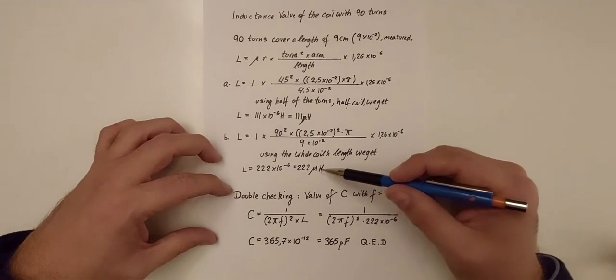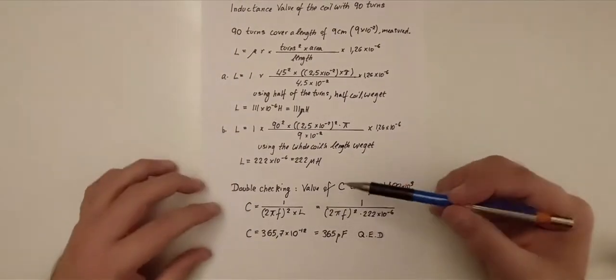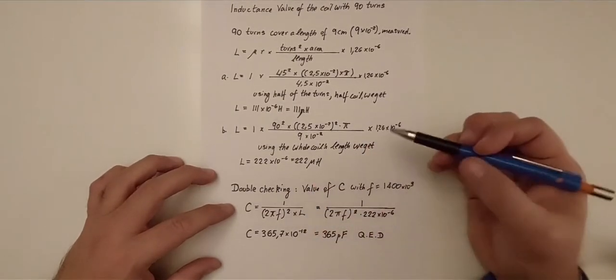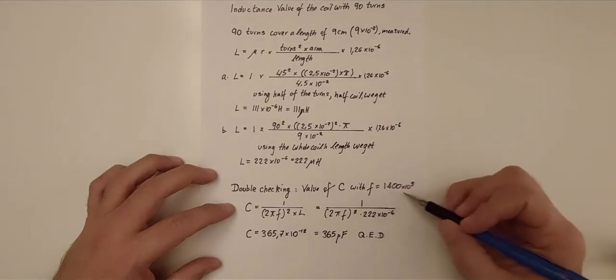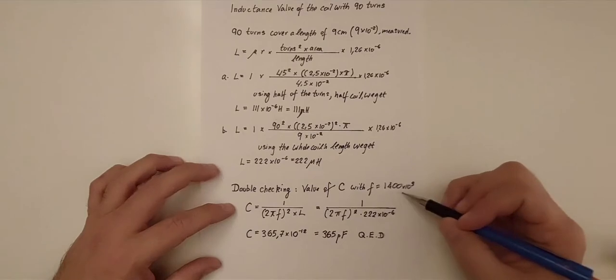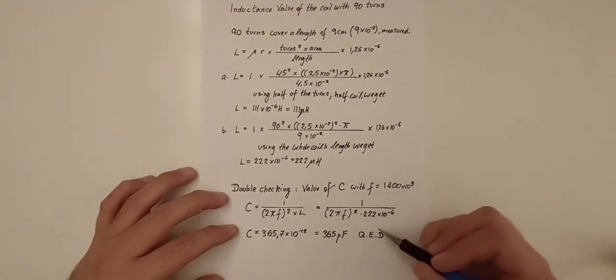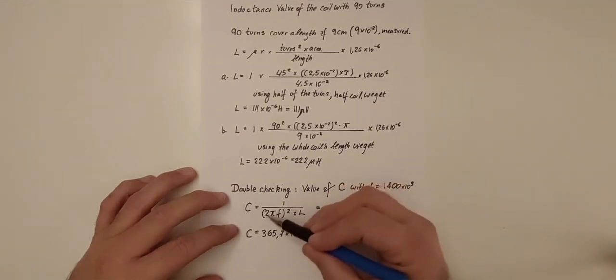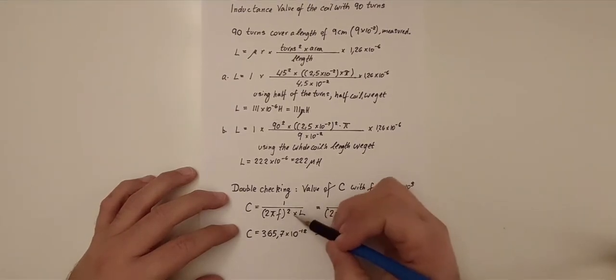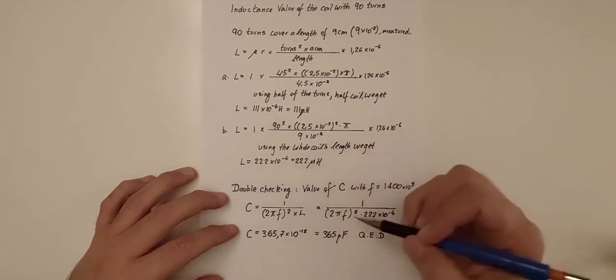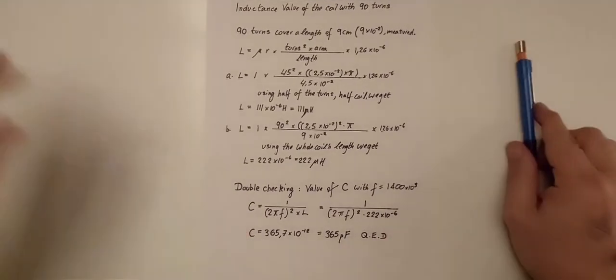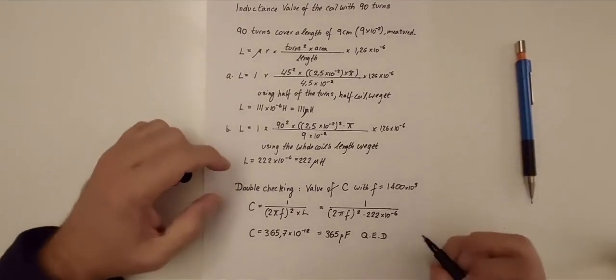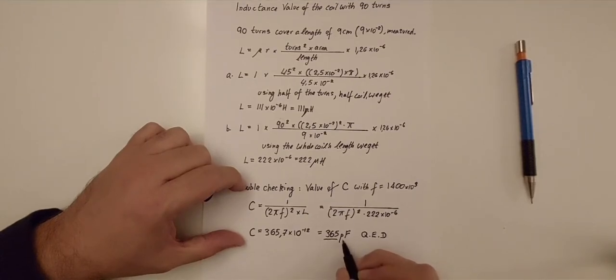Now I can take those 220 microhenrys, plug them into the other equation, the one rearranged for the capacity. The capacity—and I need to decide a frequency, I will take the highest frequency. Since I'm taking the highest number of turns, I will take what could be the highest frequency, 1,400 kilohertz, 1.4 megahertz. So I have to put that in the equation, and that goes in the f part. So capacity is the inverse of 2 pi f, which is the frequency squared times the inductance, which I have now. This is what it looks like, and you put that in the calculator, and 375 picofarad. That is what is coming out. That is what the schematics promised. And that's what's come out. There you go. Done.